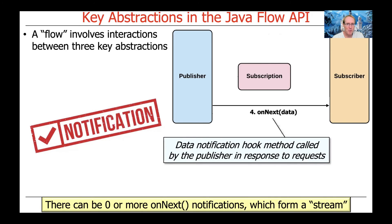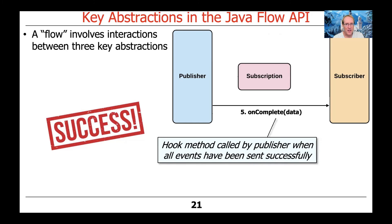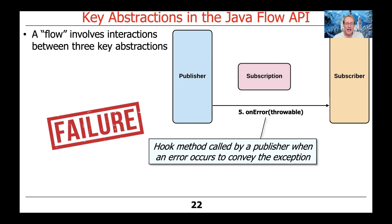There are three general types of things that can get pushed from a publisher to a subscriber. One is a data notification, indicated by calling the onNext hook method on the subscriber — the publisher uses that to notify the subscriber that there's something there, and there could be zero or more of these, forming what's known as a stream. There's also a success notification called a single time when all events are done, known as onComplete — think of it like end-of-file in a Unix shell pipeline, signaling we're finished.